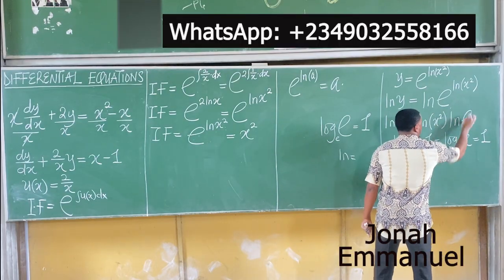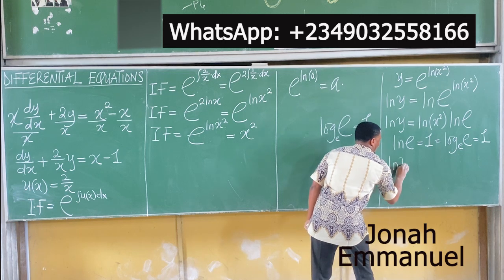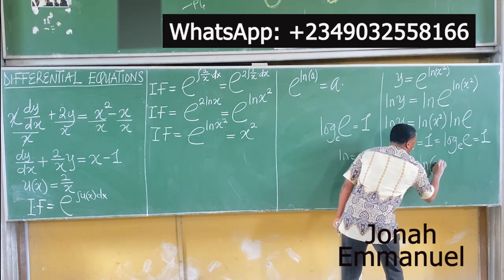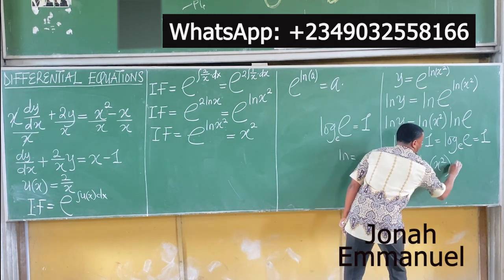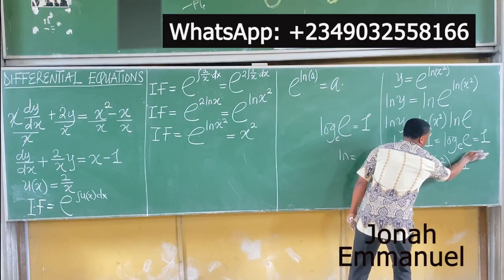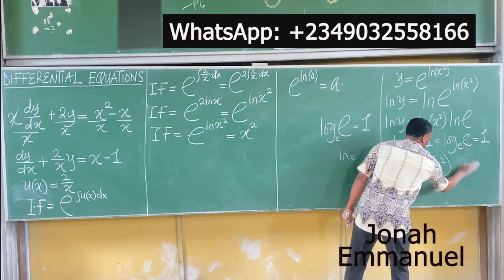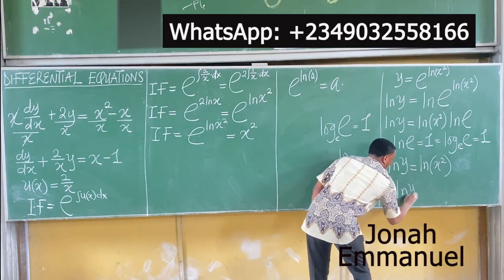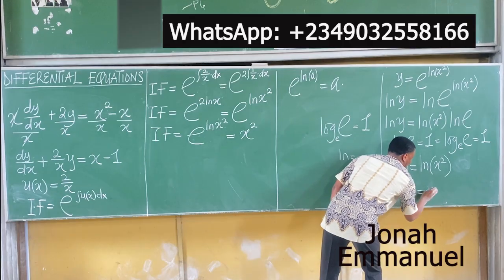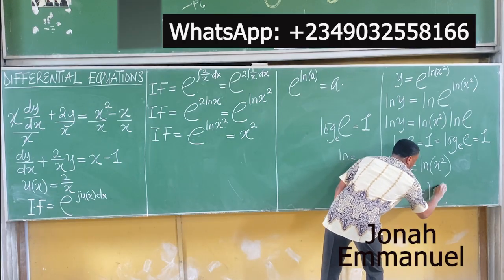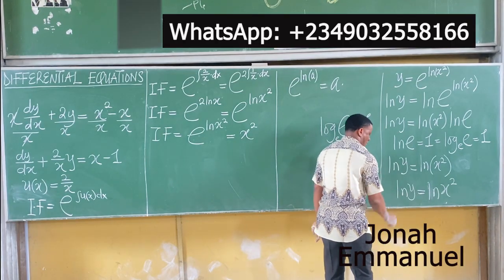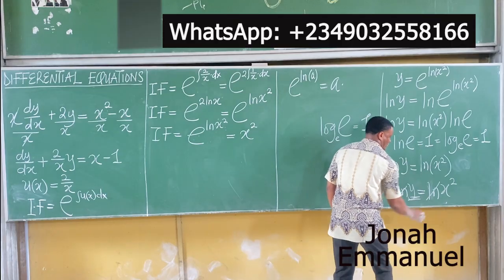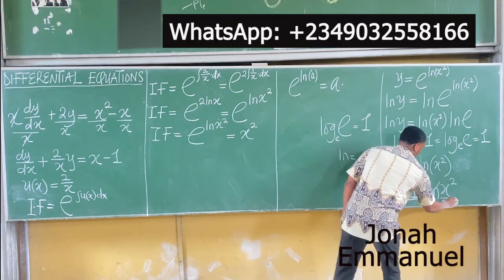At this point we know that ln e equals 1, because ln means log to base e, so ln e = log base e of e = 1. So all of this gives you 1. I have ln y equals ln x squared times 1. So it simplifies. If ln y equals ln x squared, we can cancel ln from both sides — cancel ln here, cancel ln here — and y equals x squared.